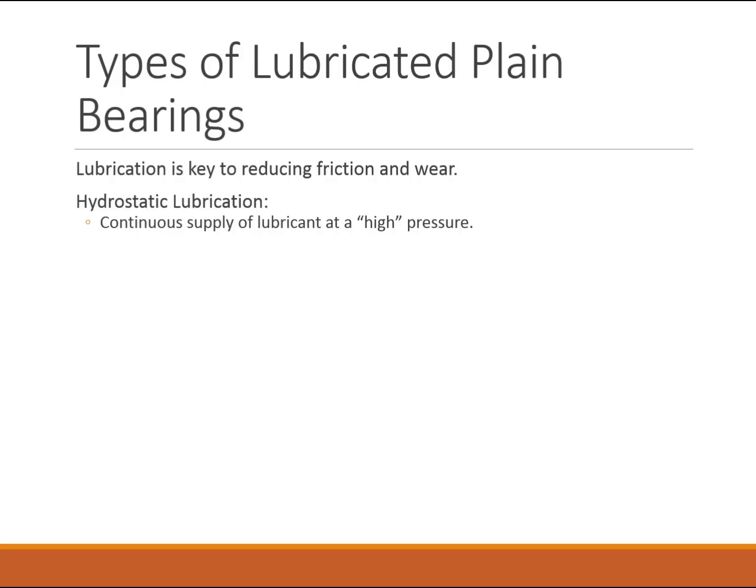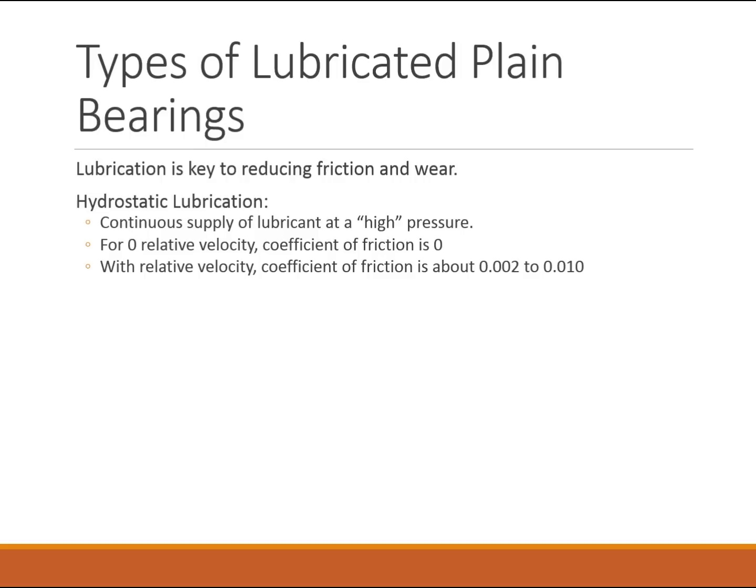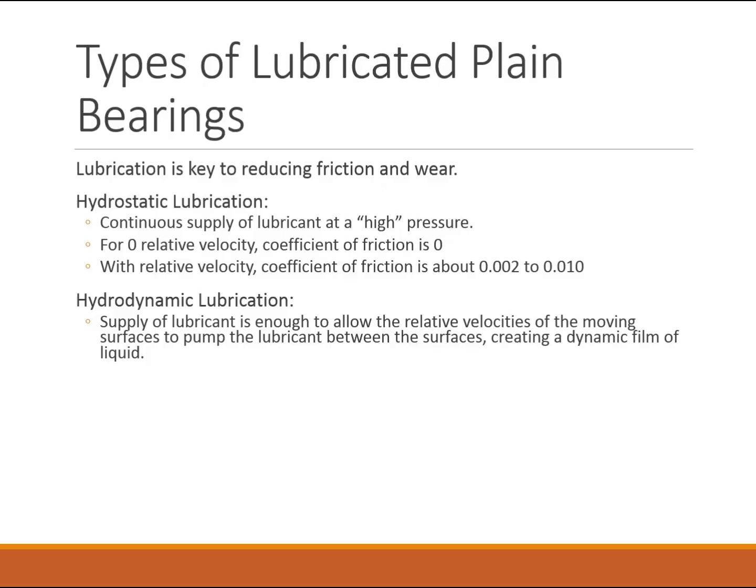Let's look at three different types of lubricated plane bearings. Lubrication is absolutely the key to reducing both friction and wear. In hydrostatic lubrication you have a continuous supply of high-pressure lubricant and a very low coefficient of friction — almost nothing at zero relative velocity, and normally around 0.002 at running velocity, which is a very small coefficient of friction.